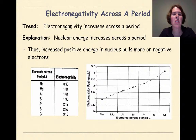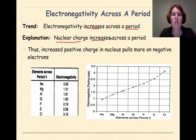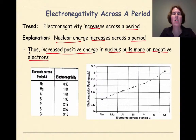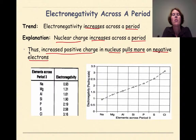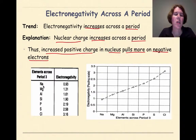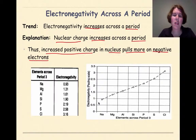Let's look at the trend of electronegativity across the period. The general trend is that electronegativity is going to increase across the period, very much like ionization energy. The explanation is that the nuclear charge increases across the period, and the increased positive charge in the nucleus pulls more on the negative electrons. Looking at the data for period 3, sodium has an electronegativity of 0.93, and as we go across the period it increases until we reach chlorine at 3.16.